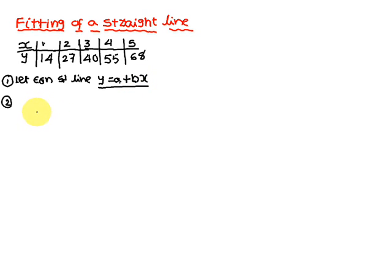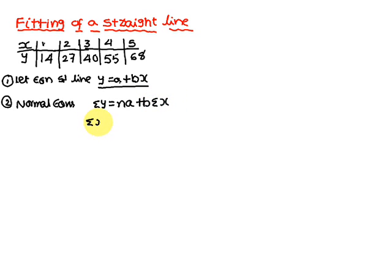To solve the values of a and b using the given data, you have to use the normal equations. The normal equations are: sigma yg equal to na plus b into sigma x, and sigma x·yg equal to a·sigma x plus b·sigma x squared. If you solve these two equations, you are going to get the values of a and b, and substituting those into the straight line equation gives you the straight line.